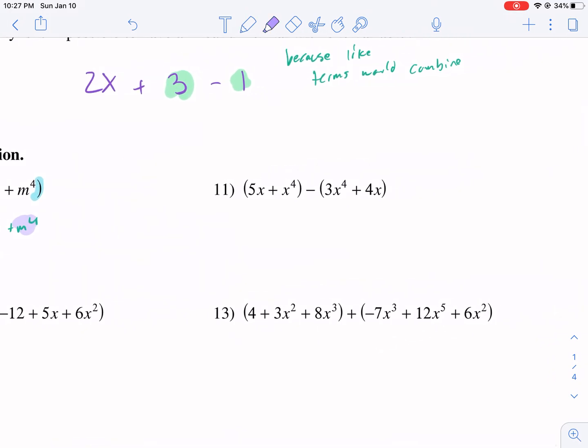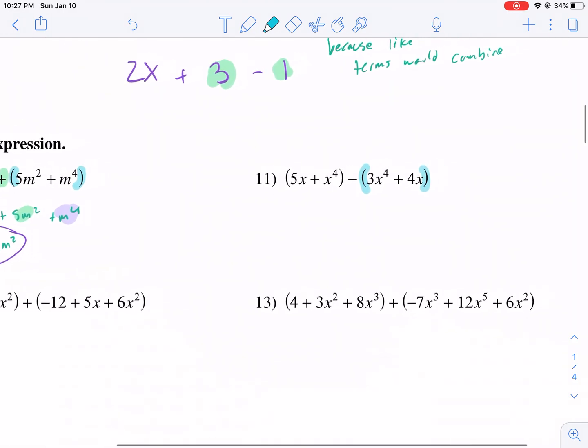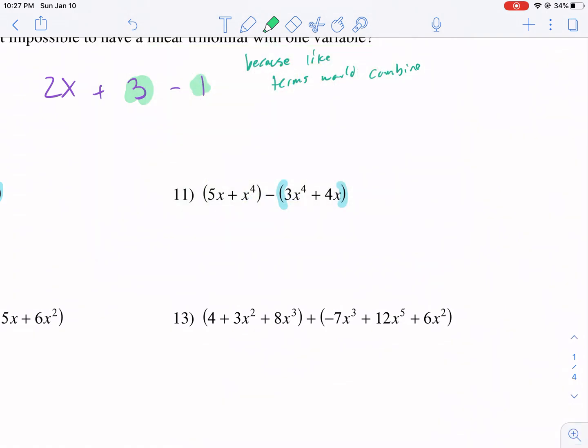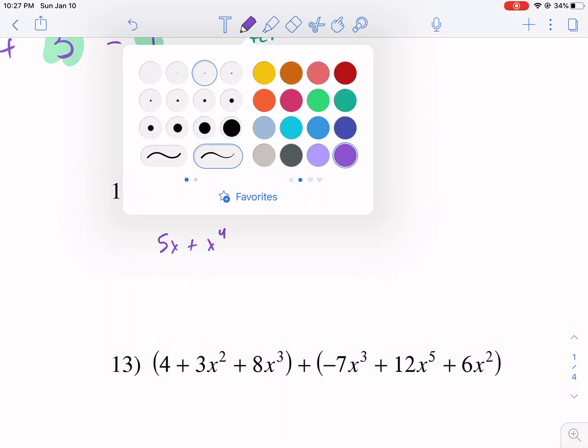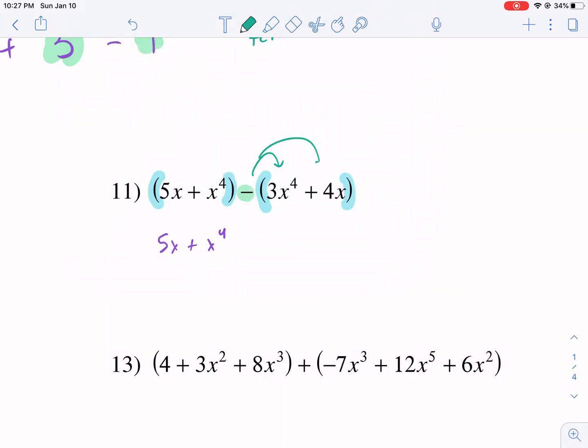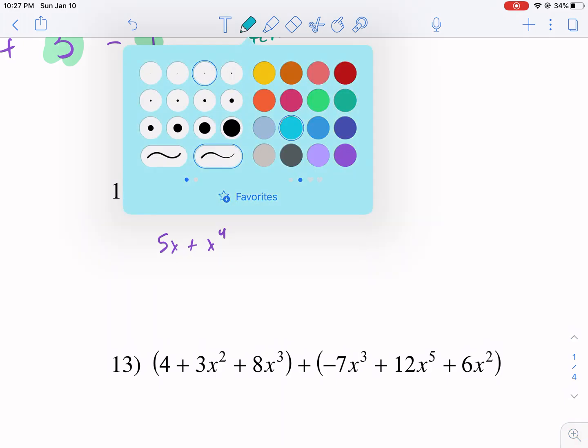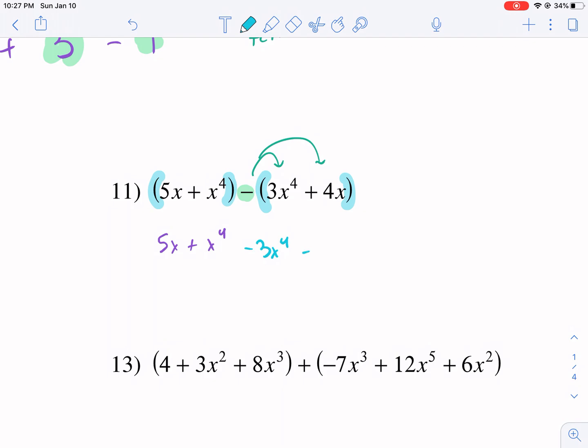So negative m squared plus five m squared gives us four m squared. We want it in descending power order. So the four m to the fourth should go first. Five m to the fourth plus four m squared. And that's our final answer. That's simplified. Now, this is what I was talking about with things that modify parentheses. Here I have parentheses, and I have this little minus sign out in front of it.